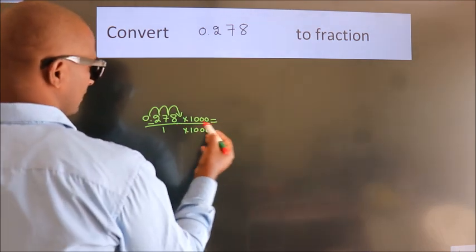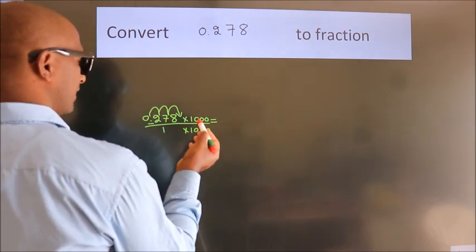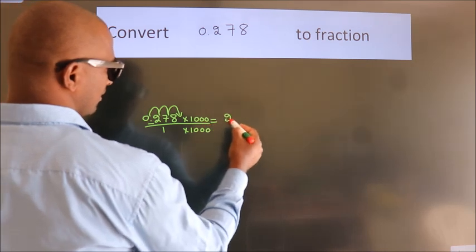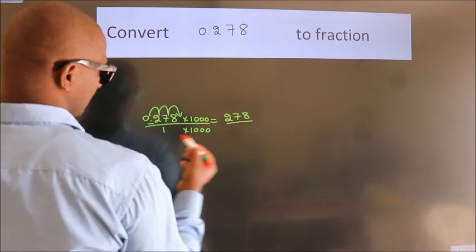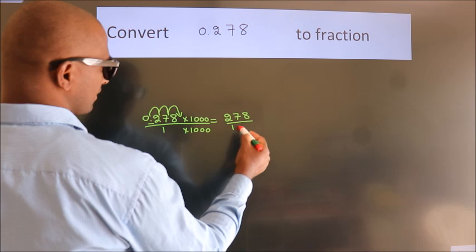Next, 0.278 into 1000 equals 278. 1 into 1000 equals 1000.